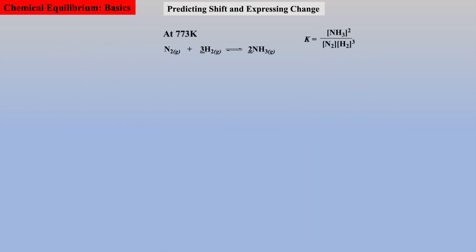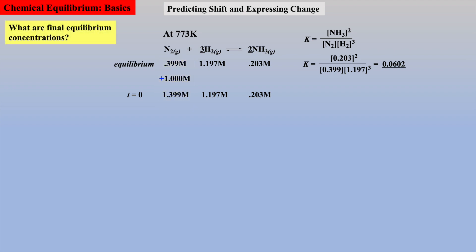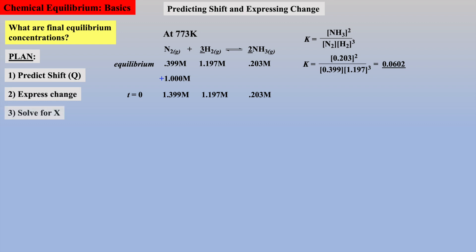Let's do one more problem to predict shift and change with the Haber reaction. Equilibrium concentrations were measured and recorded in a one-liter flask, and an equilibrium constant calculated. While at equilibrium, an additional one mole of nitrogen was added, raising the concentration of nitrogen to 1.399 molar. If we are asked to calculate the final equilibrium concentrations, we have to first predict shift with the aid of a Q calculation, write the change, solve for X, and then calculate final equilibrium concentrations.